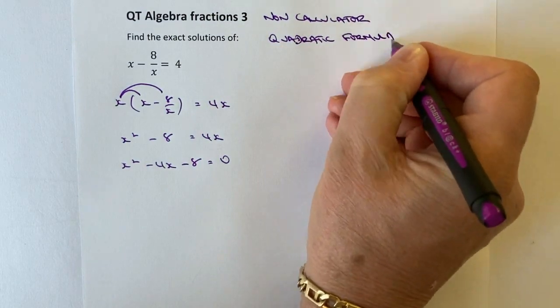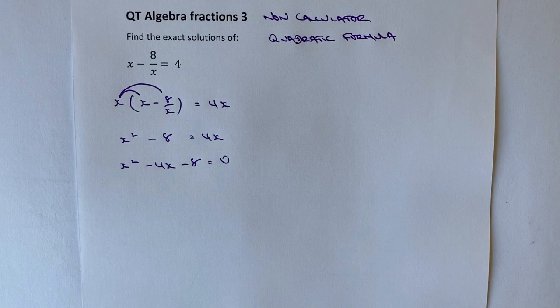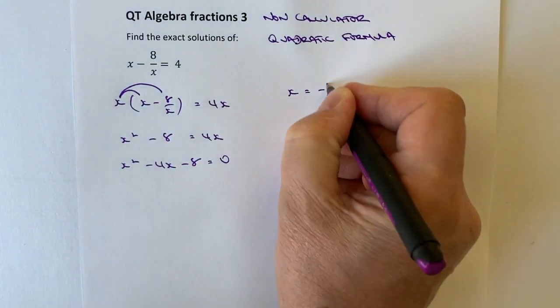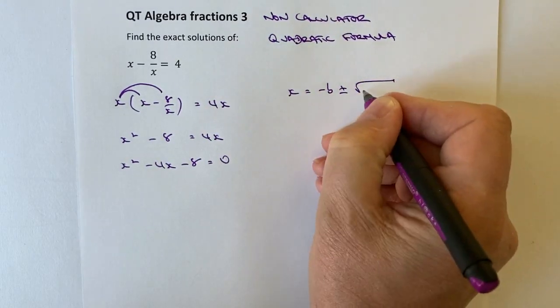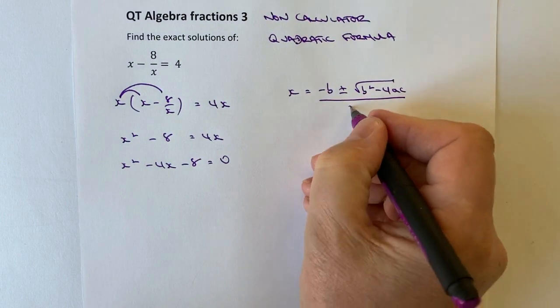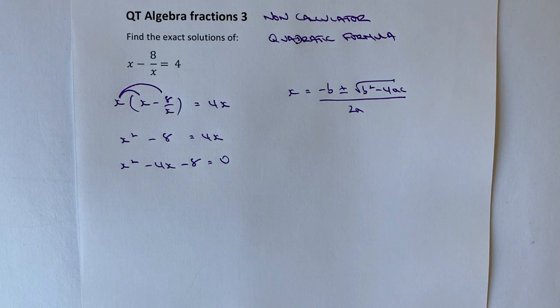Now, not everybody will do this. Some people will use completing the square, and that's perfectly fine if you prefer. So let's have a look then at x equals minus b plus or minus the root of b squared minus 4ac all over 2a. And you just need to remember that. Some exams, it actually gives you it as part of the exam. Other exams, you just need to learn it.